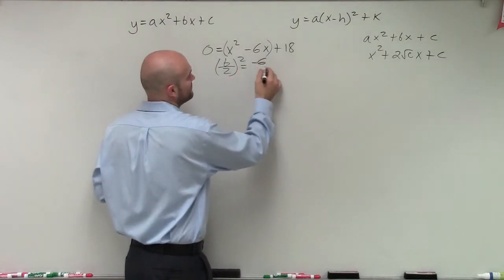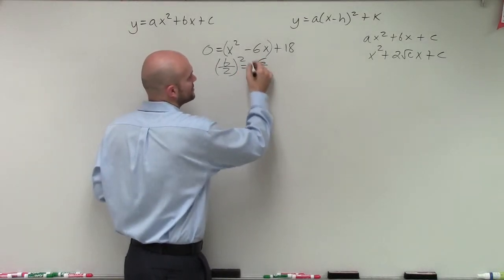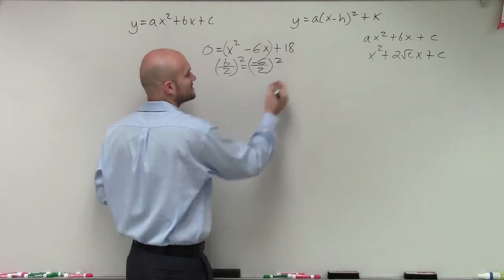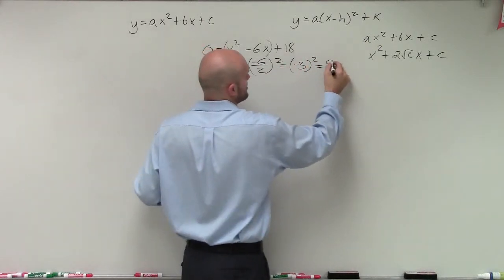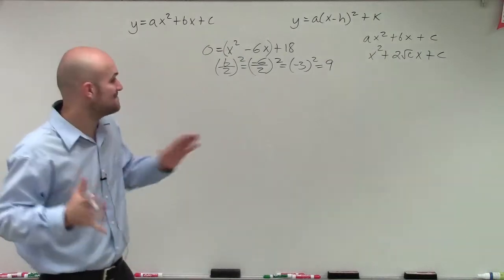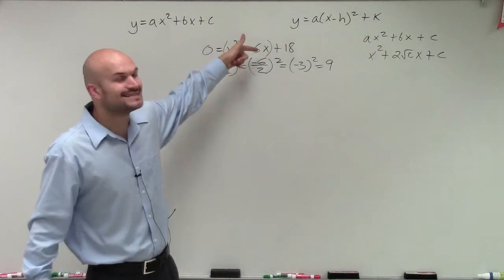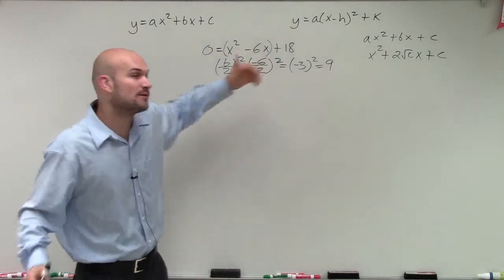So to do that, I take negative b divided by 2 and square it. Well, negative 6 divided by 2 is a negative 3 squared, which equals a positive 9. Now I'm going to take that value and I'm going to add it inside my parentheses to now create my perfect square trinomial.